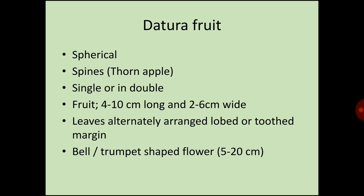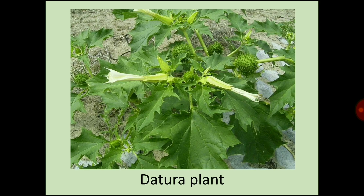Datura fruit is spherical in shape, has spines like a thorn apple, and can be single or double. It is a fruit 4 to 10 cm long and 2 to 6 cm wide. Leaves are alternately arranged with lobed or toothed margins. The bell- or trumpet-shaped flower is around 5 to 20 cm. You can see the Datura plant in this picture.